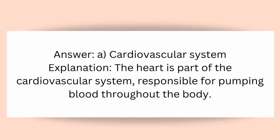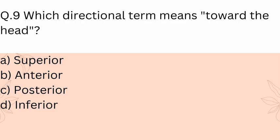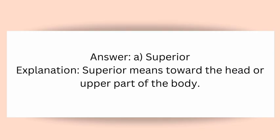Question 8: The heart is an organ of which body system? A) Cardiovascular system, B) Respiratory system, C) Digestive system, D) Nervous system. Answer: A) Cardiovascular system. Explanation: The heart is part of the cardiovascular system, responsible for pumping blood throughout the body.